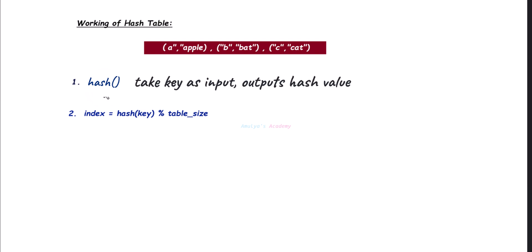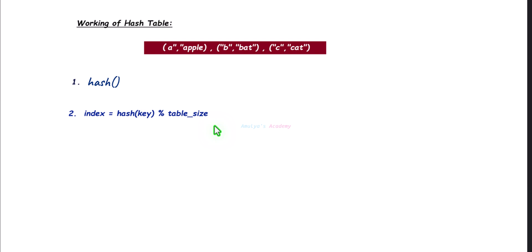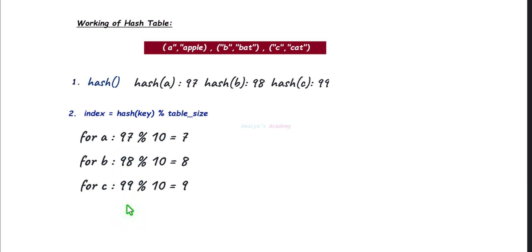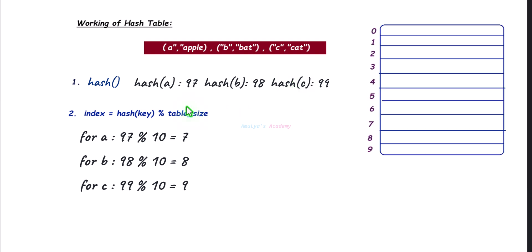The first process is we need to convert the key to a number. Next, we need to find the index. Using the hash function we get the number, then we apply: number modulus table size. If I take the table size as 10, then we will get the index for A, B, and C. For A it is 7, for B it is 8, and for C it is 9. This is the index where we will store the key-value pair in the table. So using the hash function we will get the hash value, and using that hash value we can find the index.